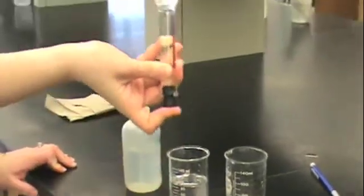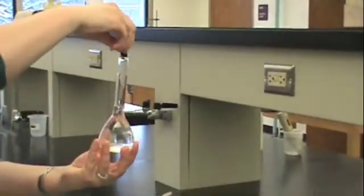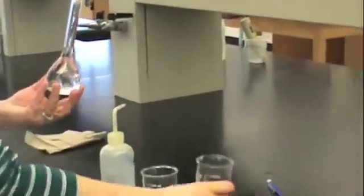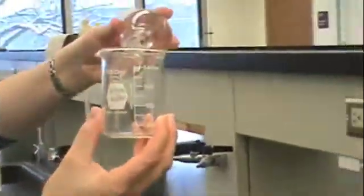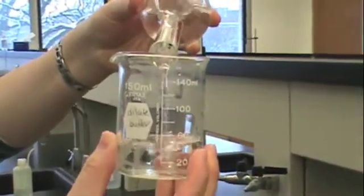Cap the flask and invert several times to make a homogeneous solution. Then, pour this solution into a beaker that you've labeled Dilute Buffer.